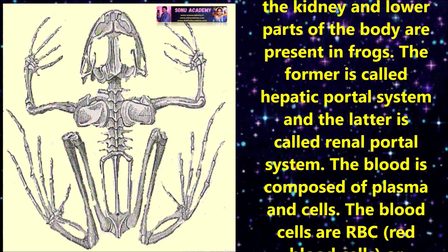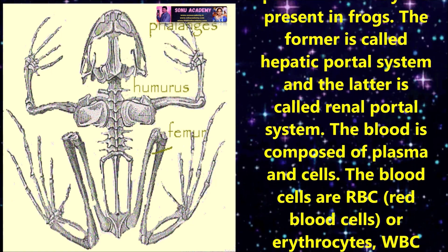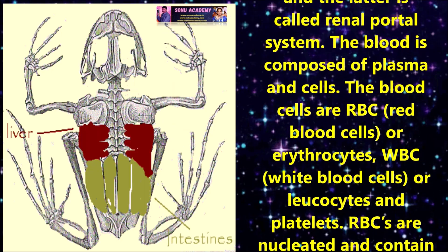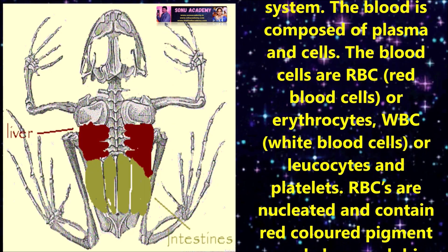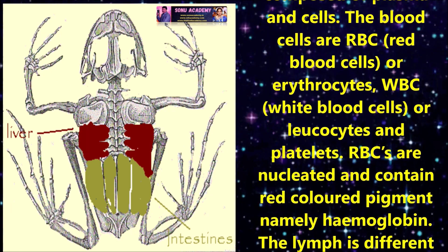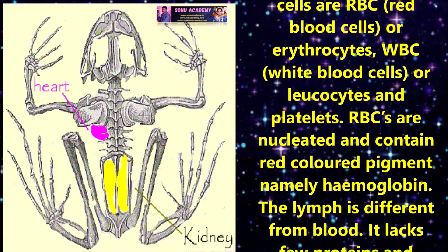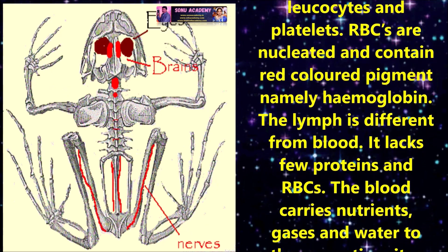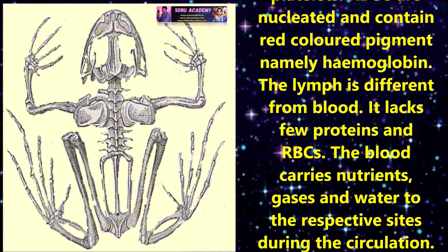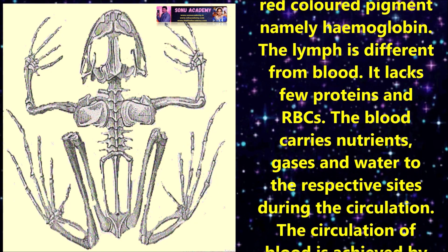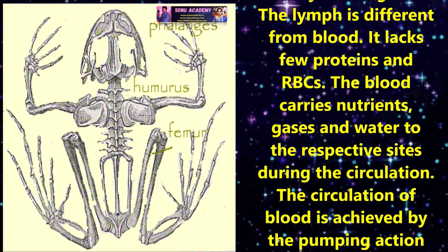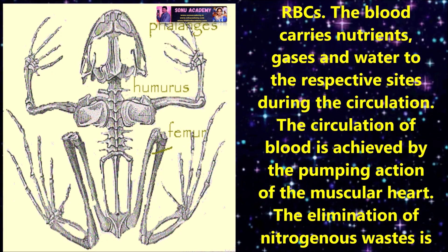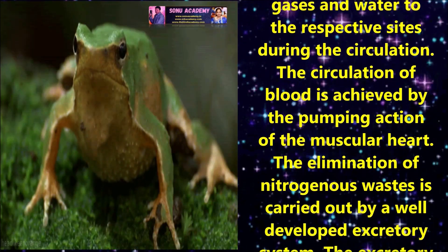The blood is composed of plasma and cells. The blood cells are RBCs (erythrocytes), WBCs (leukocytes), and platelets. RBCs are nucleated and contain the red pigment hemoglobin. The lymph is different from blood — it lacks certain proteins and RBCs. The blood carries nutrients, gases, and water to their respective sites during circulation. The circulation of blood is achieved by the pumping action of the muscular heart.